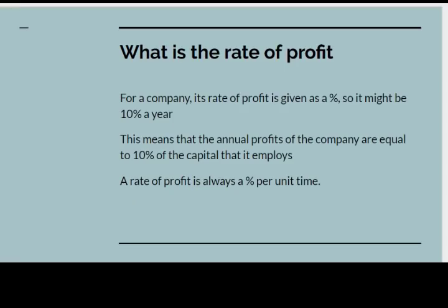So first, what is the rate of profit? If we take an individual company into account, its rate of profit is given as a percent — so you might say it's ten percent a year. This means that the annual profits of the company are equal to ten percent of the capital that it employs, and when you get a rate of profit it's always given as a percent per unit time, normally a percent per annum.